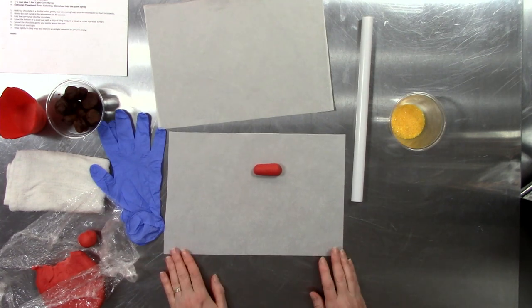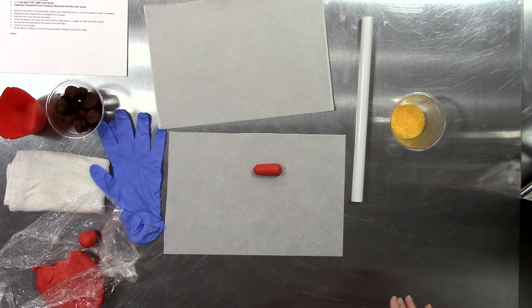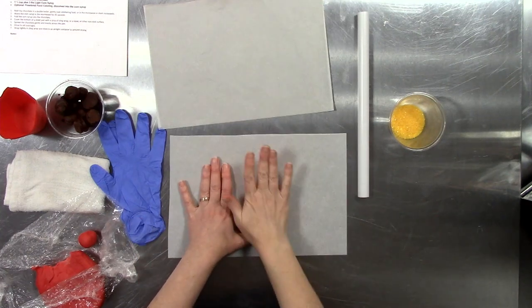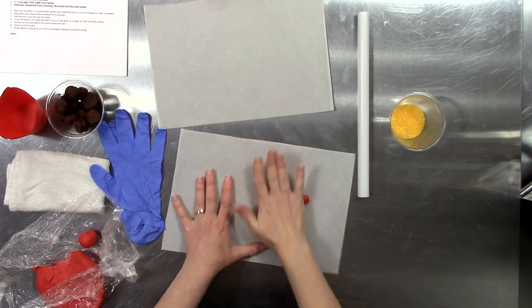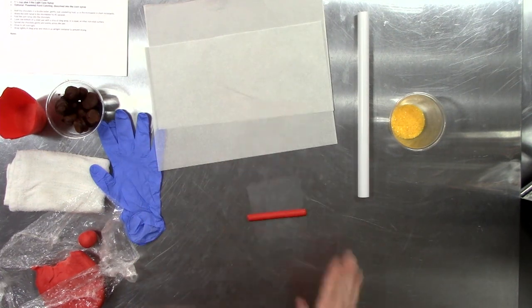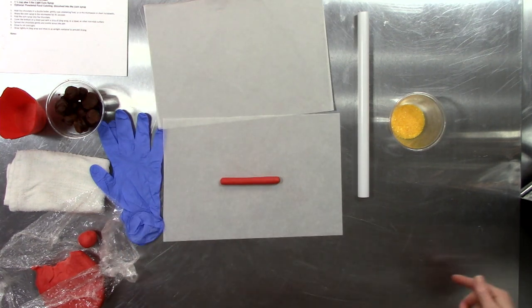We're going to take a ball about the size of a golf ball and roll it out into a log. We're probably going to trim this down, but I'm going to roll it here on my table between parchment paper to help prevent making it overly warm. You can also use it directly on your stainless steel table, but if it starts to get sticky because of the hand warmth, work with it in your parchment paper.